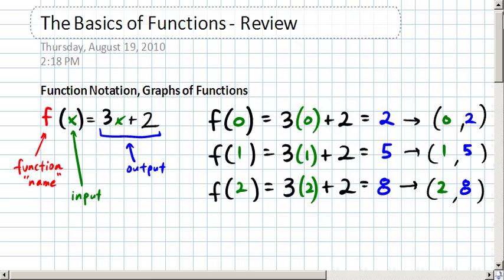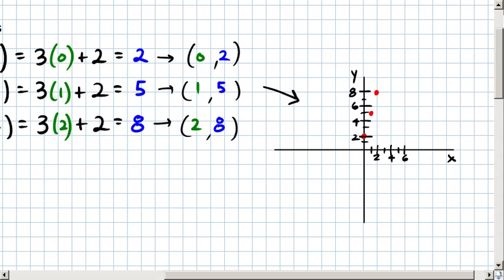We can then plot those 3 points as shown in the coordinate plane on the right. Now, note that on the coordinate plane, I've labeled my axes. Here's the x-axis. And here's the y-axis.